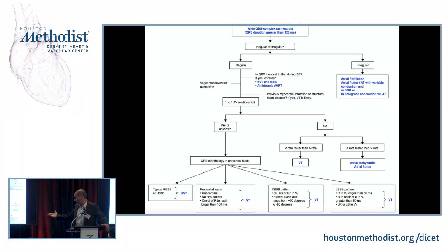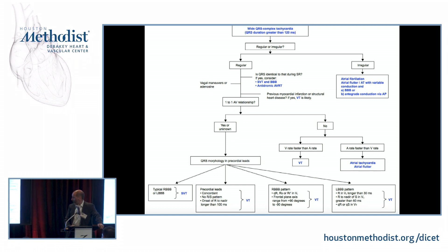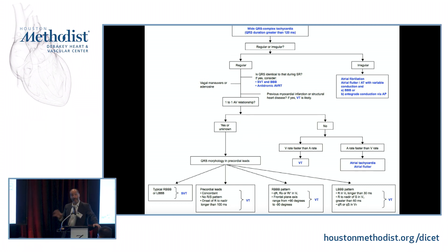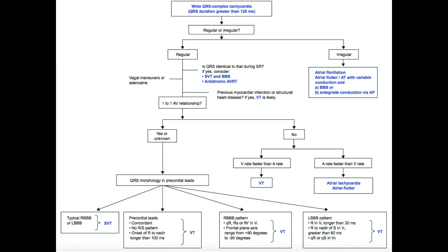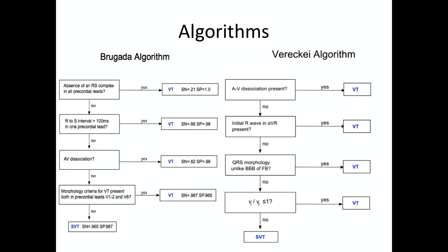When you cannot see the P waves and cannot be certain about AV dissociation, you must look at the morphology criteria for VT versus SVT. Key general features of VT: absence of an RS complex in all precordial leads, and a prolonged time from onset of the R wave to the nadir of the S wave. AV dissociation is diagnostic of VT. Morphology criteria help when these features are not clearly present.